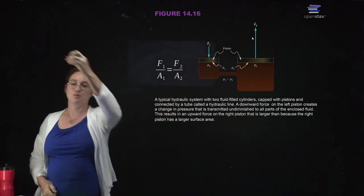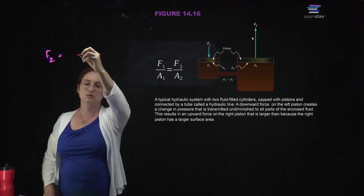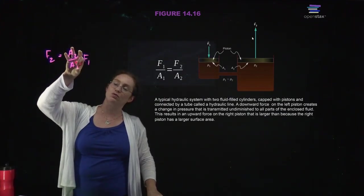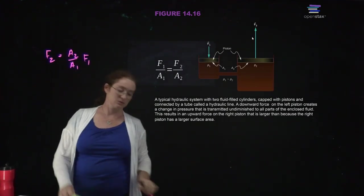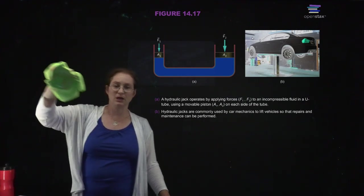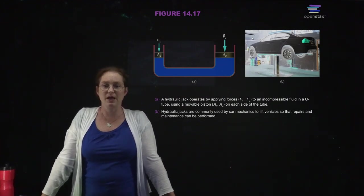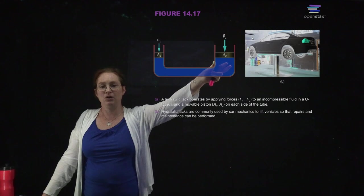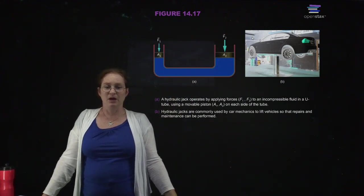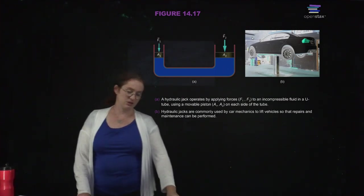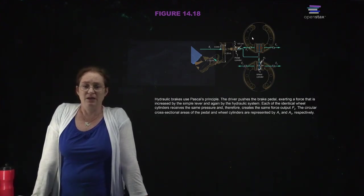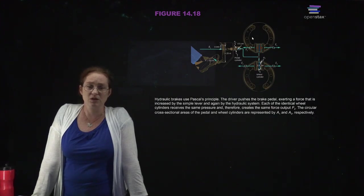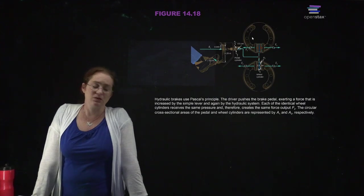F₂ = (A₂/A₁) × F₁. If A₁ is smaller than A₂, this ratio is greater than one and the force at two is greater than the force at one. You can use this principle: apply a smaller force over a smaller area and get a greater force over a larger area — which is how a hydraulic jack can push a car up. In hydraulic brakes, you push on the brake pedal, and the different areas mean a greater force is applied in order to stop the wheel.